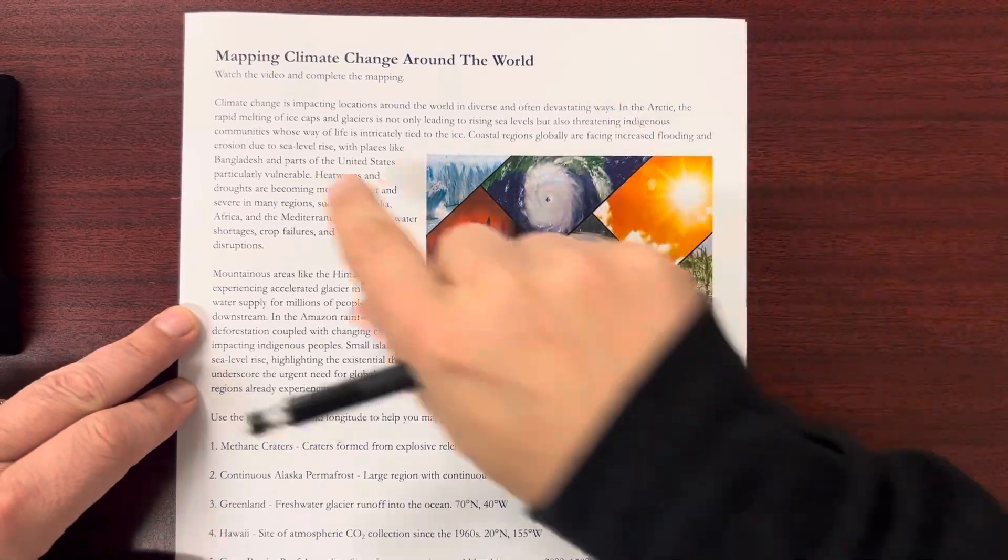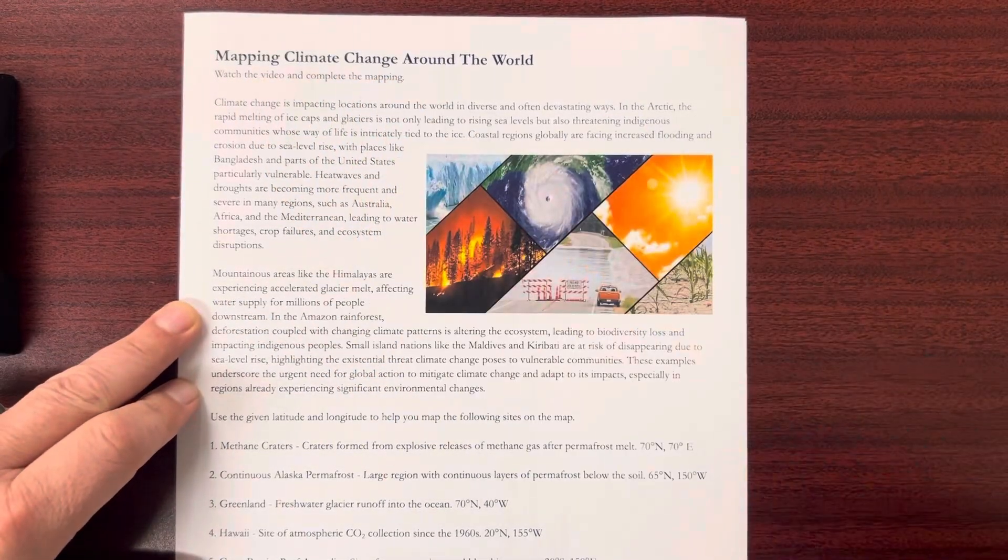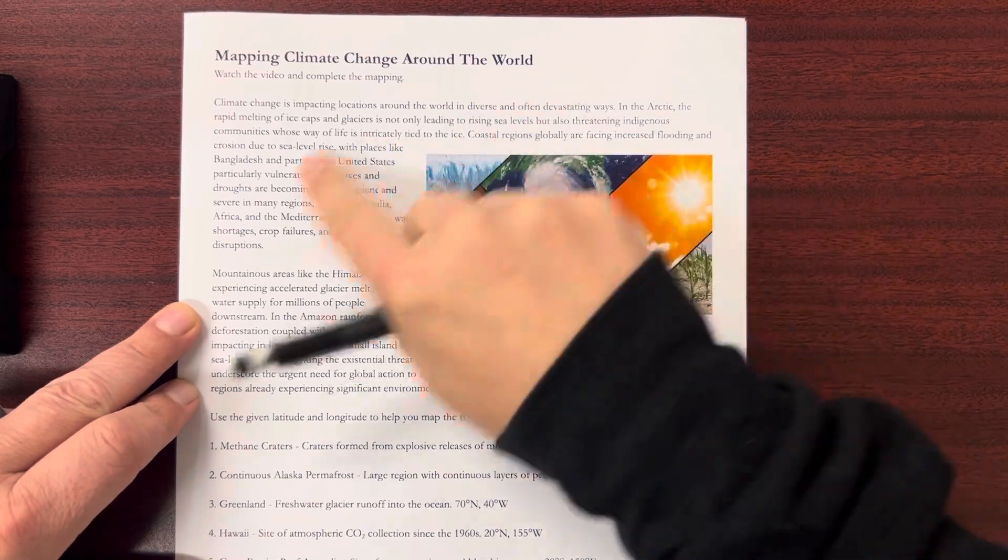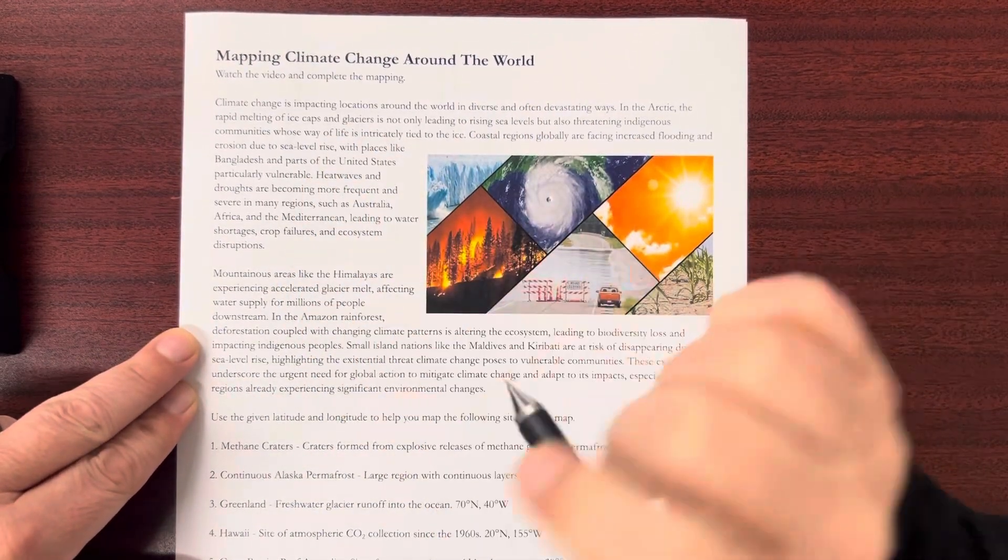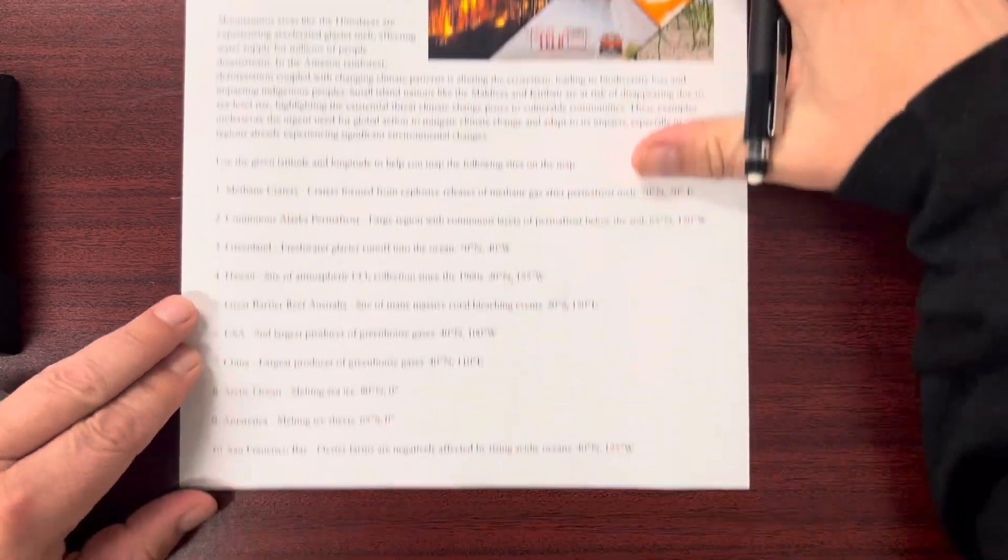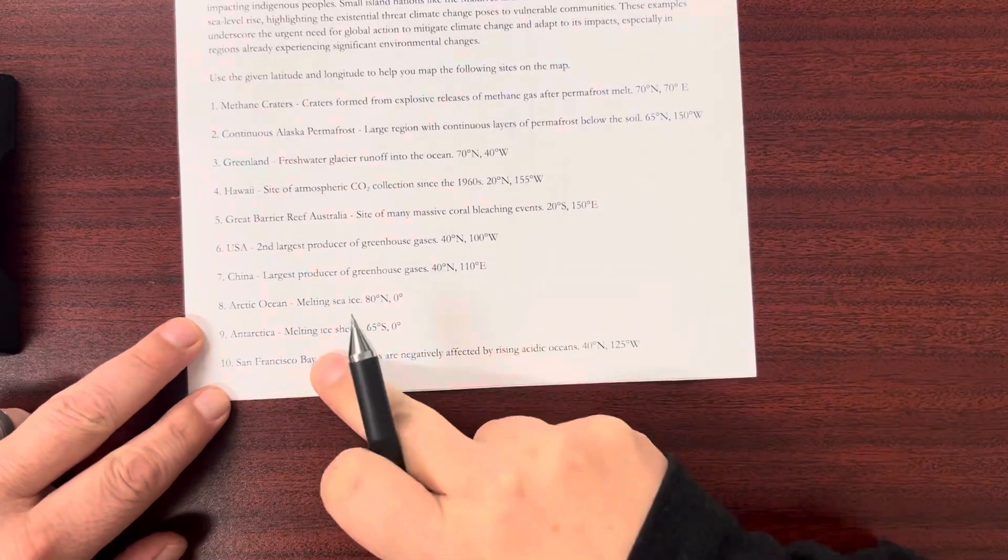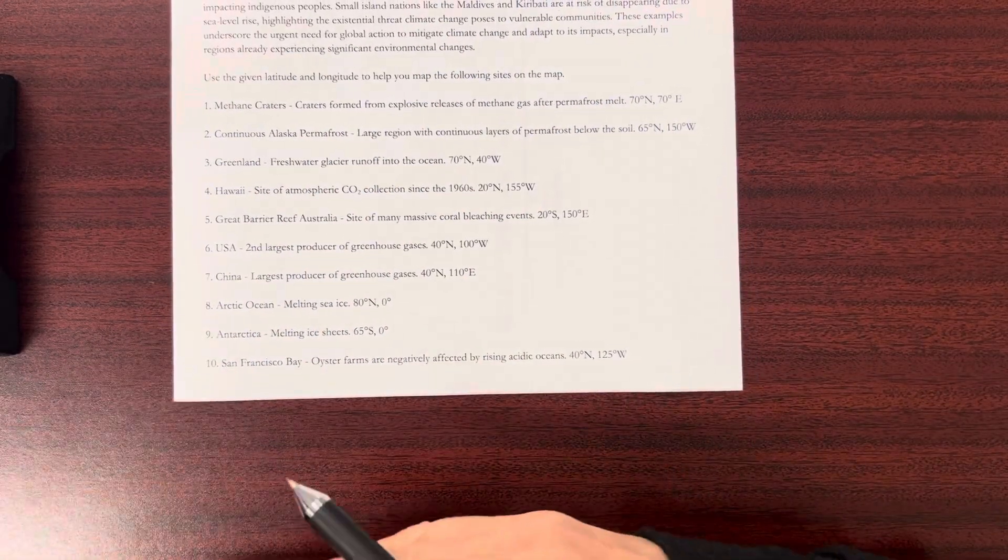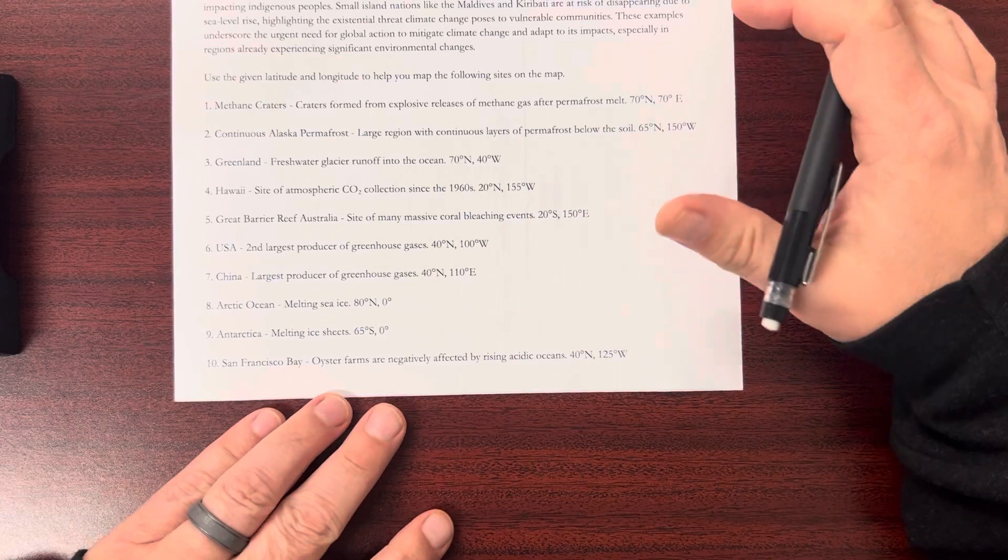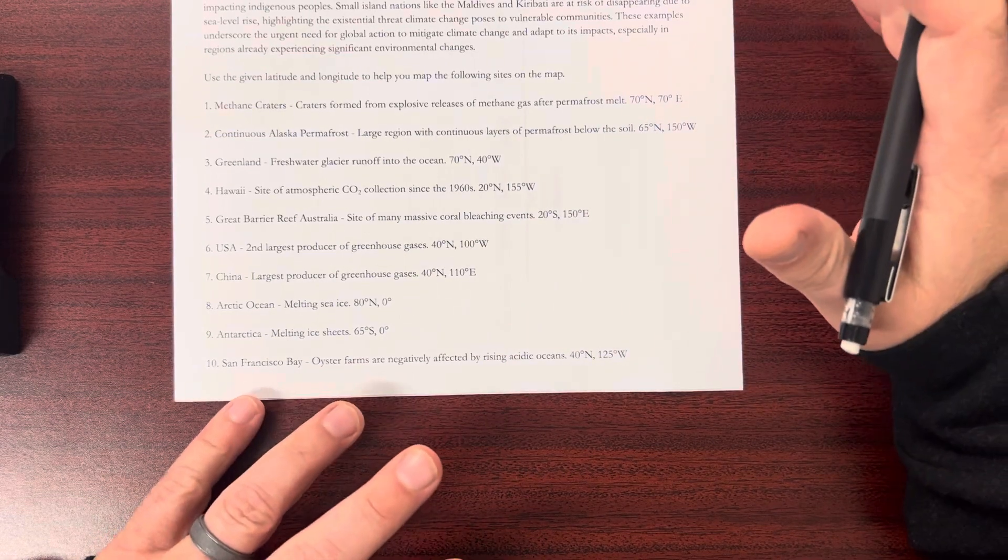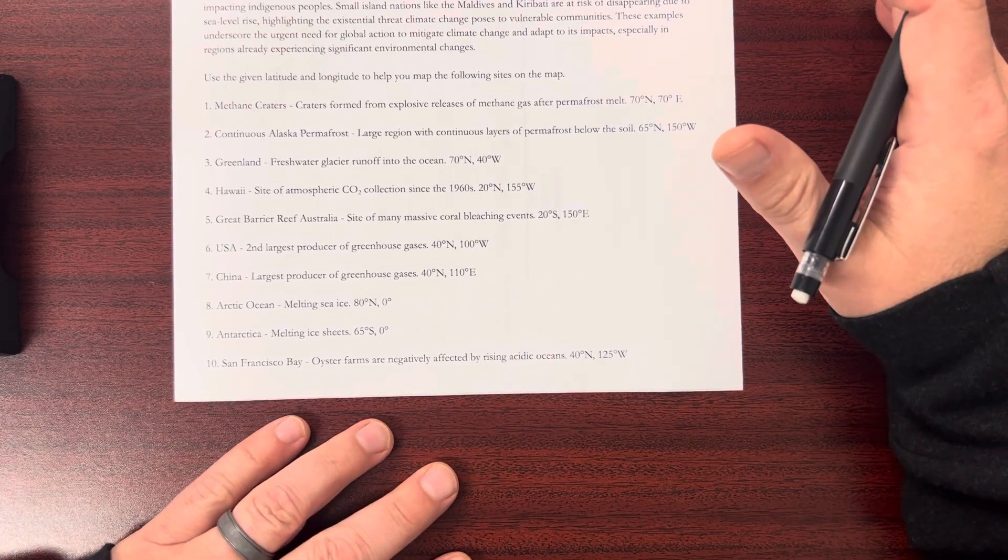Hello. Today I'm going to go over this worksheet, Mapping Climate Change Around the World. It talks about climate change and how it's affecting different parts of the world. We have here 10 locations that are in some way related to climate change.